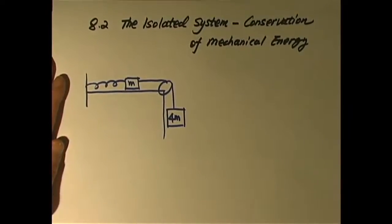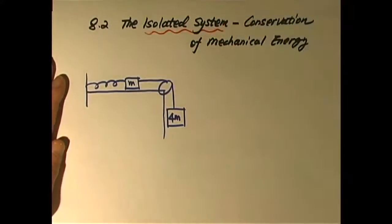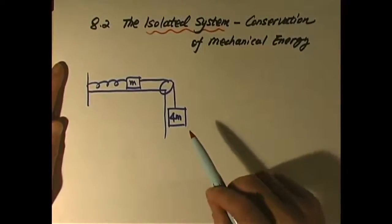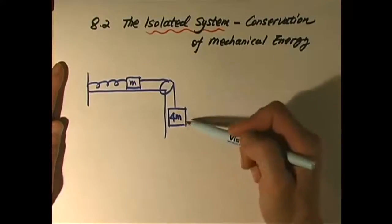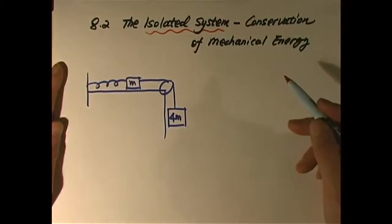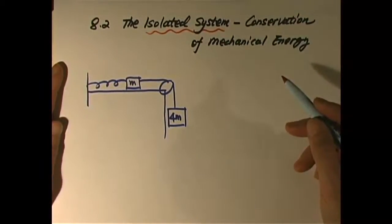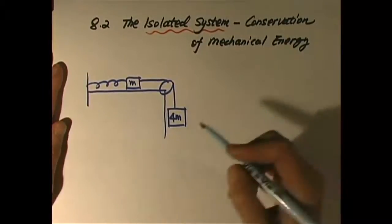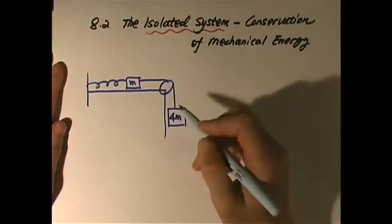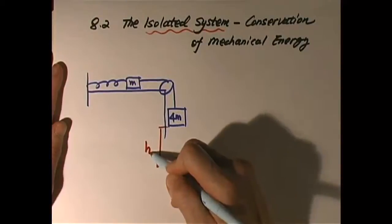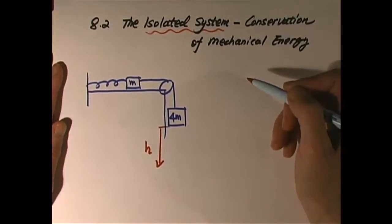Now let's look at another case for an isolated system with more than one particle. We have block m and block 4m connected by a rope over a pulley, with a spring, defined as the system. Because block 4m is heavier, it will drop. The question is: if we let 4m drop by a distance h, what will be the speed of both blocks?